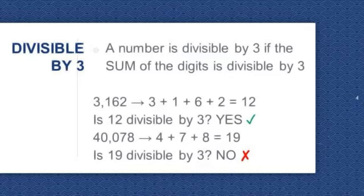Next, 40,078. 4 plus 7 plus 8 is equal to 19. Is 19 divisible by 3? No. So 40,078 is not divisible by 3.